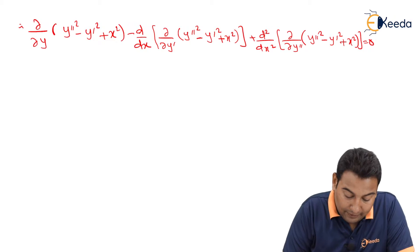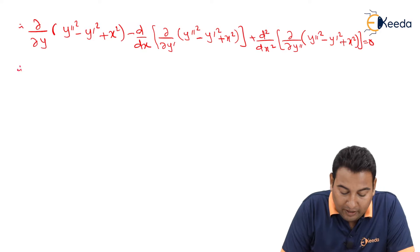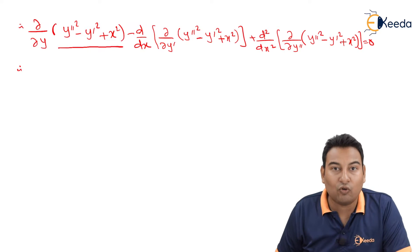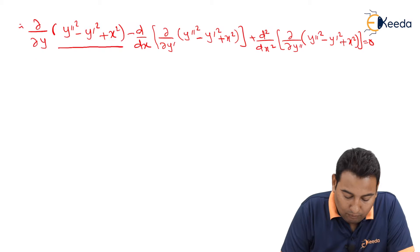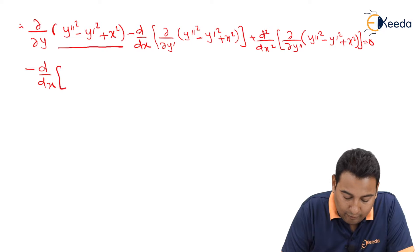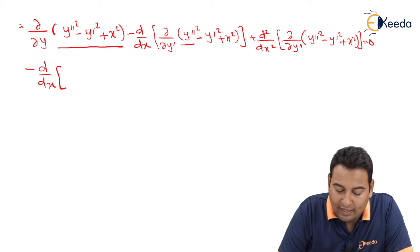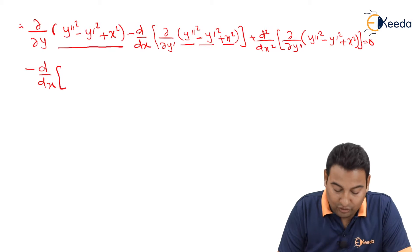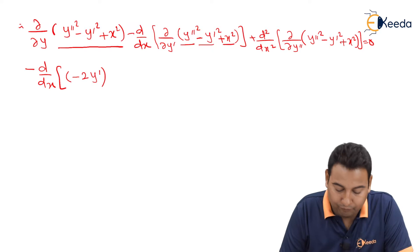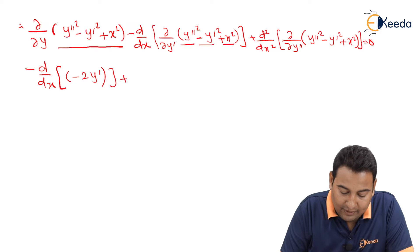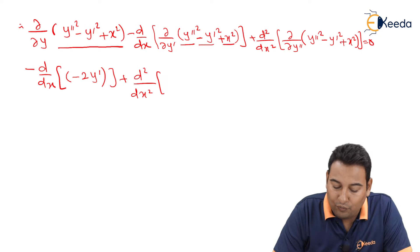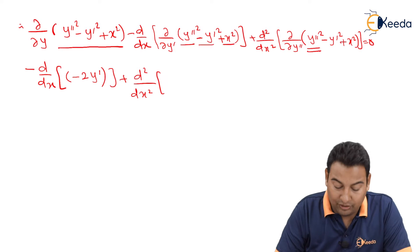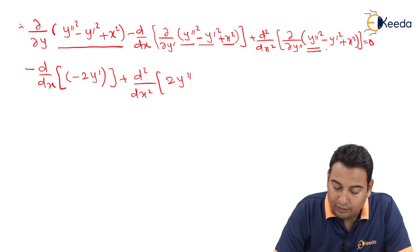Let's simplify. With respect to y, the entire term is constant, so derivative is zero. Minus d/dx: with respect to y′, y″² is zero, x² is zero, so we have minus y′² giving minus 2y′. Plus d²/dx²: with respect to y″, its derivative is 2y″.